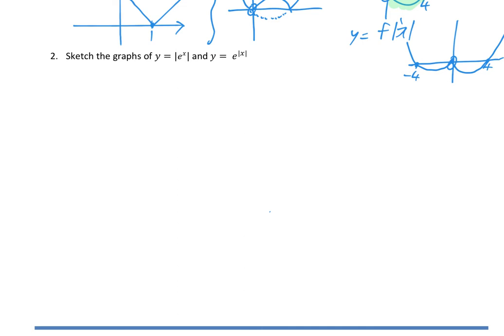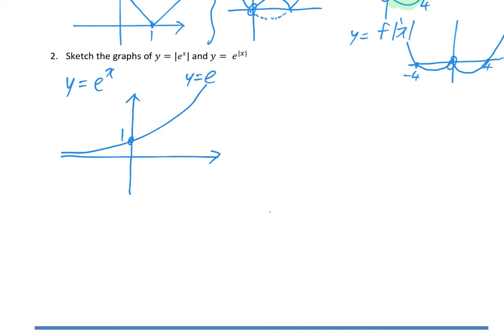The last example asks us to sketch y = |e^x| and y = e^(|x|). I'd need to start by drawing the regular exponential graph e^x. For y = |e^x|, any section underneath the graph gets reflected vertically. But since e^x is always above the x-axis, there's nothing underneath to reflect — so it's exactly the same graph.